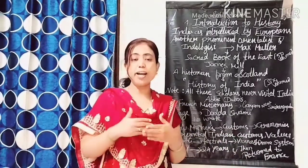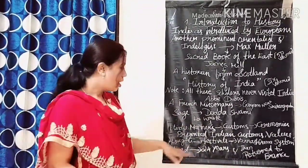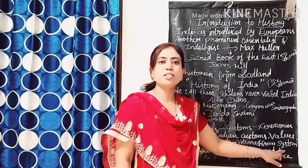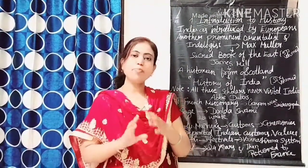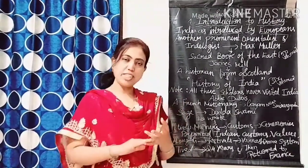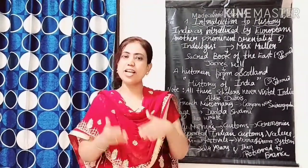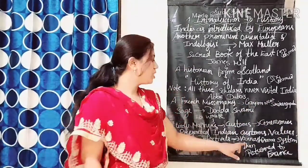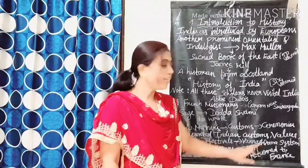He documented what values Indians followed, what they thought, which festivals they celebrated, and the Varna Ashrama system. The Varna Ashrama system has four stages: Brahmacharya, meaning childhood focused on study; Grihastha, meaning household life; Vanaprastha, meaning living like a hermit in the forest; and Sanyasa, meaning renouncing worldly things. He lived in India for 24 years and then returned to France.